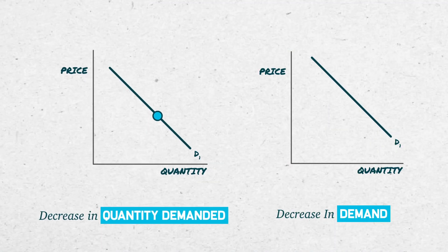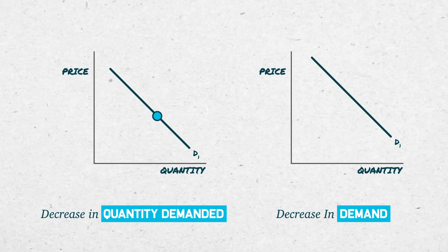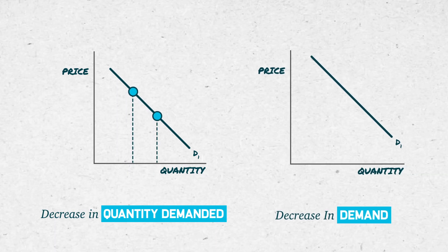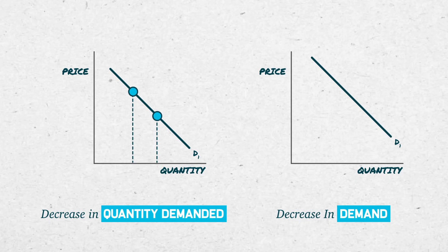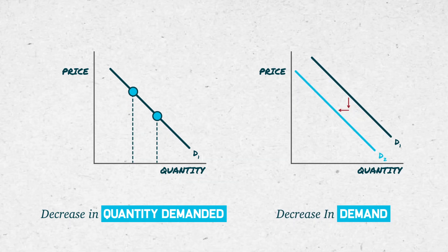In the first case, on the left, we have a decrease in the quantity demanded — that is a movement along a fixed demand curve. In the case on the right, we have a decrease in demand: the entire demand curve shifts down and to the left.